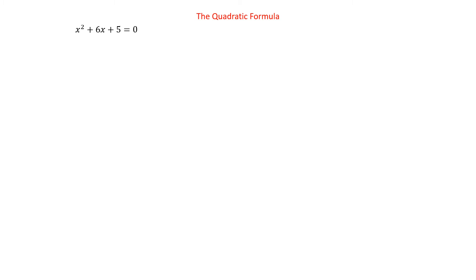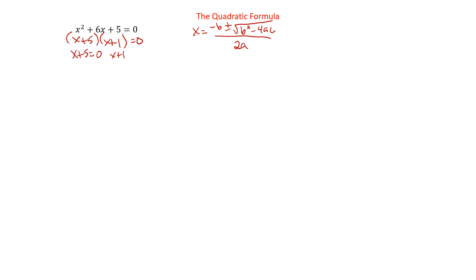Let's see how this is used. We have x squared plus 6x plus 5 equals 0. We could factor this one: x plus 5 times x plus 1, so x equals negative 5 or x equals negative 1. Generally speaking, if you can factor it, do that — factoring is the easiest, simplest way to solve a quadratic. But you can't always factor it.